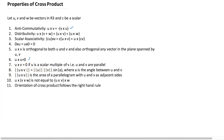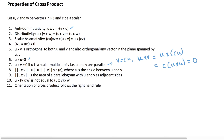The sixth property states that the cross product of a vector with itself is zero. The seventh property is an extension of the sixth and third properties. If v and u are parallel, then v is equal to c times u, hence u cross v would be equal to u cross (c times u), and using property 3 this can be written as c times (u cross u), which is equal to zero.